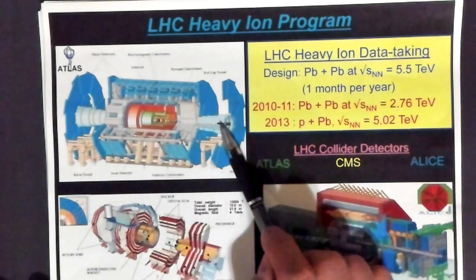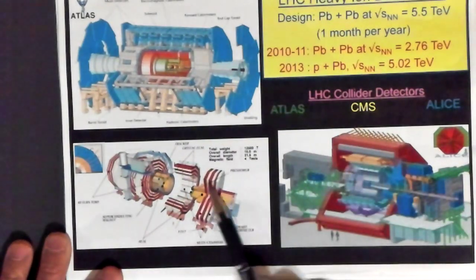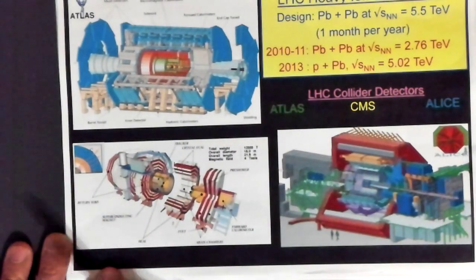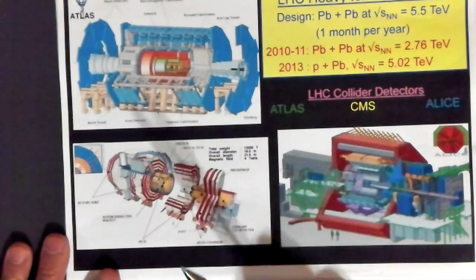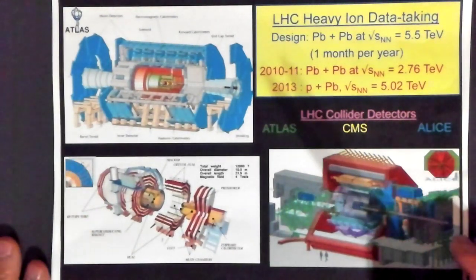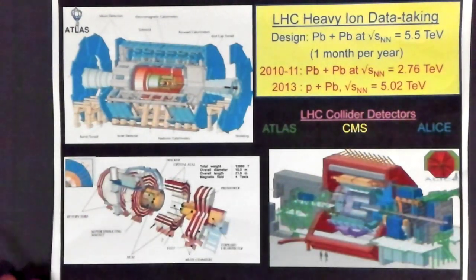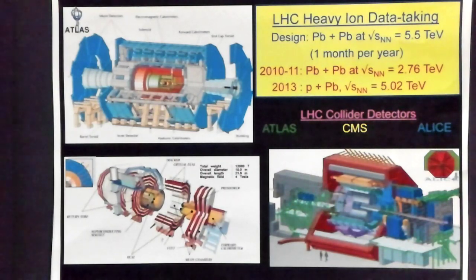Here's a picture of the ATLAS detector, and here's a picture of the CMS detector. The ATLAS and CMS detectors were mainly designed for high-energy particle physics — the discovery of the Higgs and properties of the Higgs particles, decays, and physics like that. But they can also be used for heavy ion collisions.